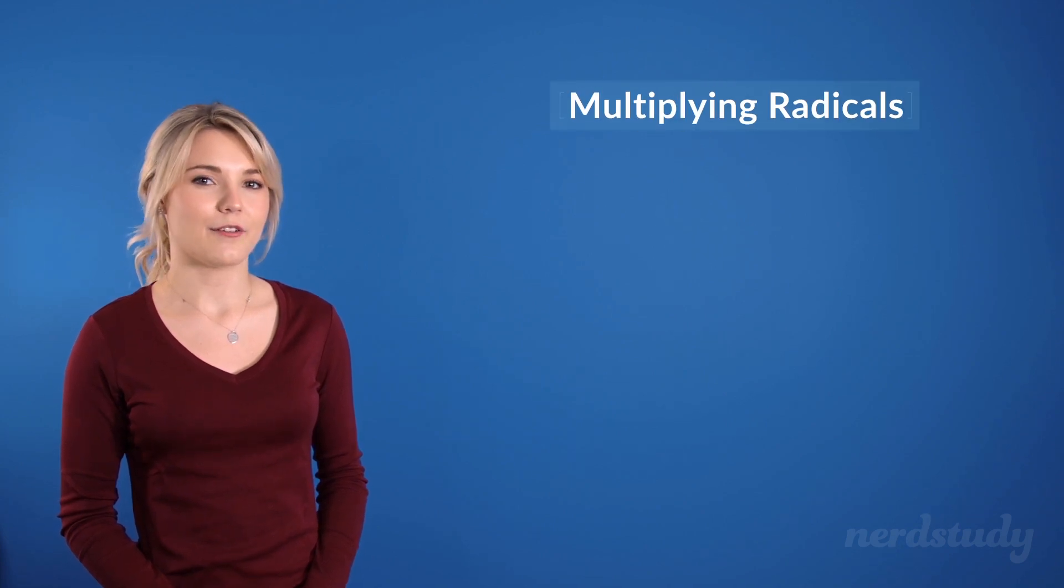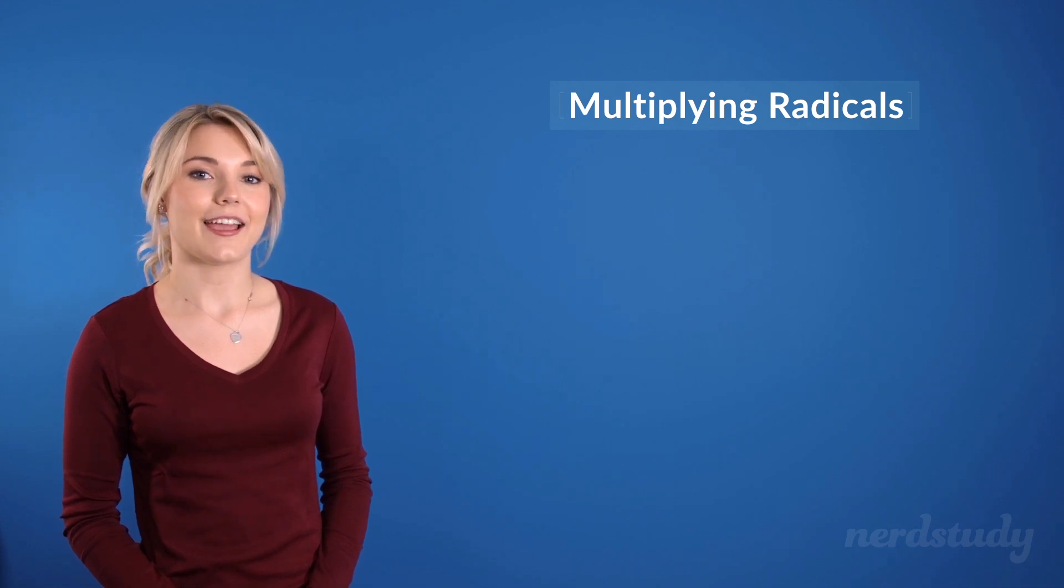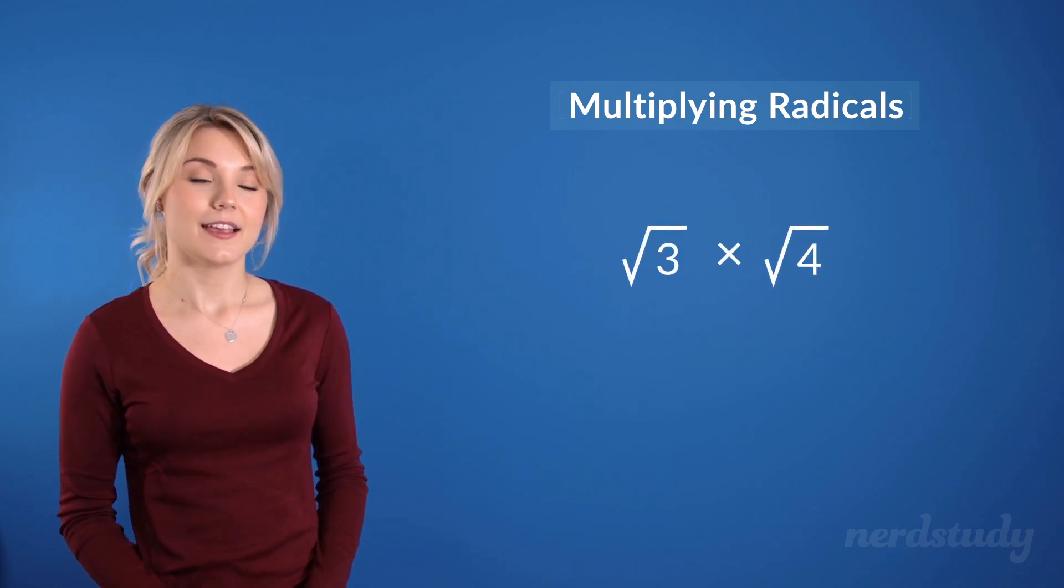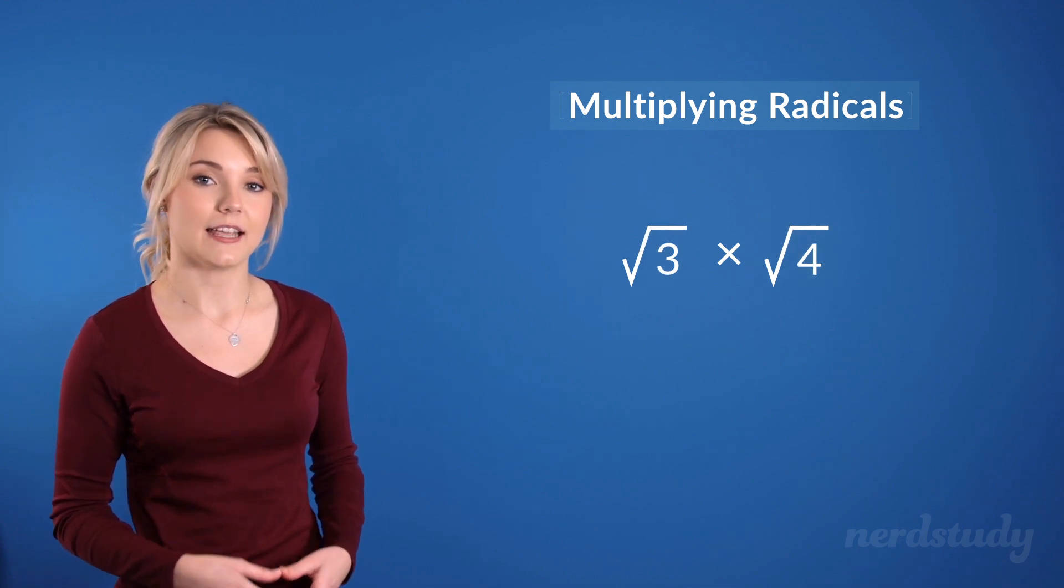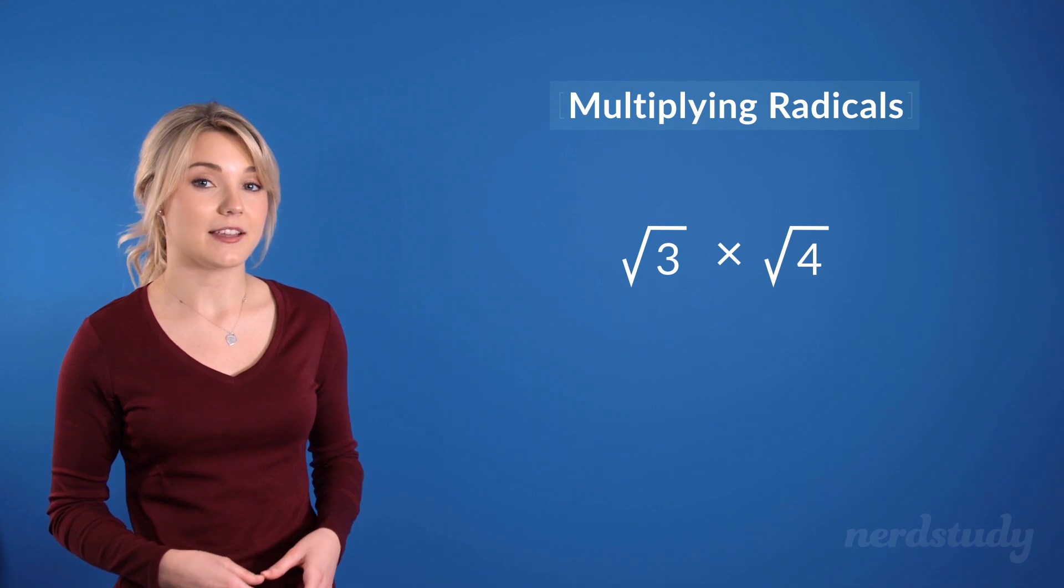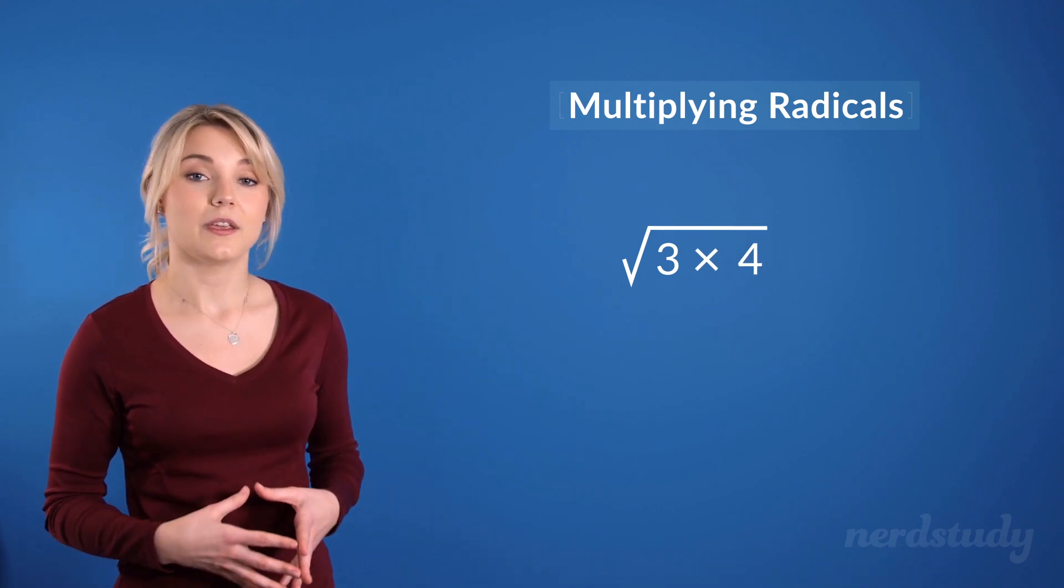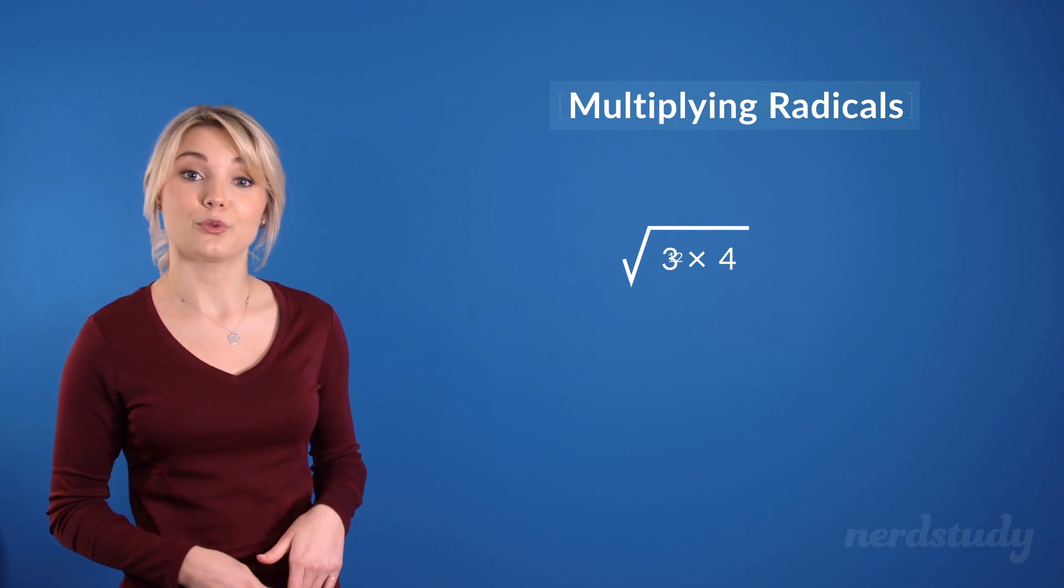Now let's move on to multiplying radicals. How do we multiply radicals with positive radicands? Well let's take a look at this example here. Since both of these are under a radical sign and are being multiplied together, it can actually be seen like this under the same radical sign, so we can just multiply them to get root 12.